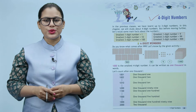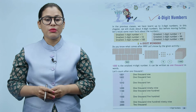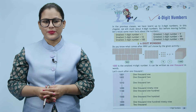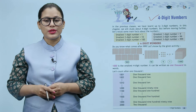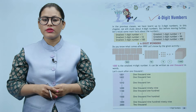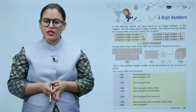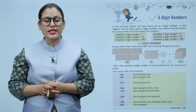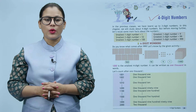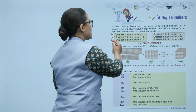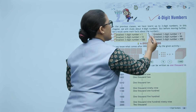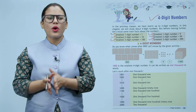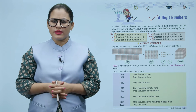The smallest one digit number is equals to one. The smallest two digit number is equals to ten. The smallest three digit number is equals to one hundred. The greatest one digit number is equals to nine. The greatest two digit number is equals to ninety-nine. The greatest three digit number is equals to nine hundred ninety-nine. Four digit numbers — do you know what comes after nine hundred ninety-nine?